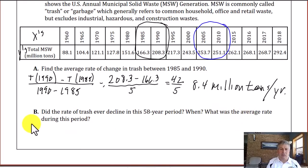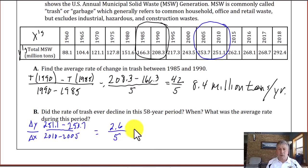What was the average rate of change? So we need our y values over our x values. So our x is 2010 minus 2005. And then our corresponding y's 251.1 minus 253.7. So that's our change in y over our change in x. And that comes out to negative 2.6 all over 5, which is a negative 0.52 millions of tons per year.